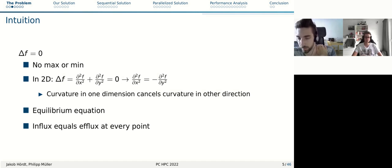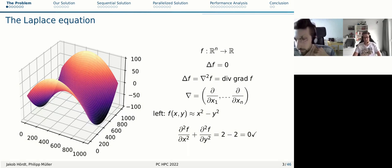I tried to give you a little bit more intuition what this means for the functions that satisfy this. Firstly, you can imagine that there's no max or min, or else the divergence of the gradient wouldn't be zero at this point. Another intuitive interpretation in two dimensions is that the curvature in one dimension exactly cancels out the curvature in the other dimension.